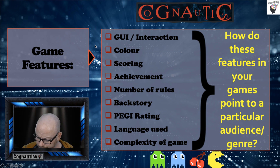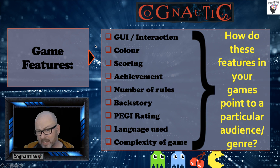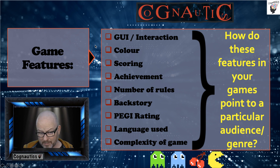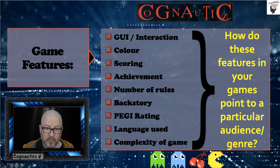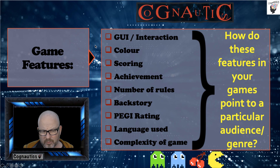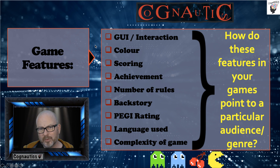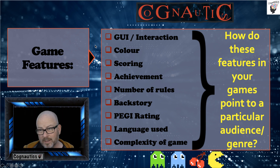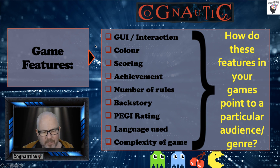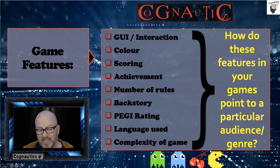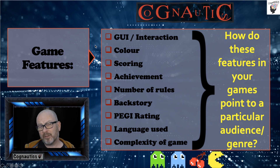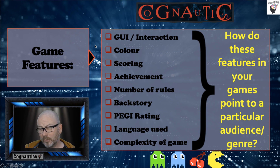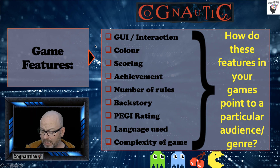First, we've got the graphical user interface — the way that the player interacts with the game. The colours of the game might appeal to different age groups, different audiences. Then scoring and achievement, the number of rules, a backstory to the game, the PEGI rating — in terms of Grand Theft Auto being an 18 and Doodle Jump being for anyone. Also the language used and the complexity of the game and its rules. These are the features you'll focus on when thinking about genre and audience.